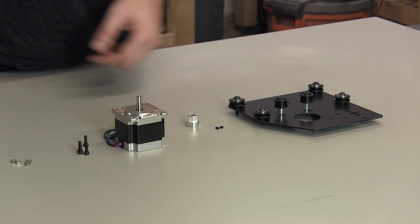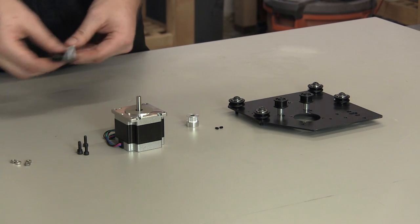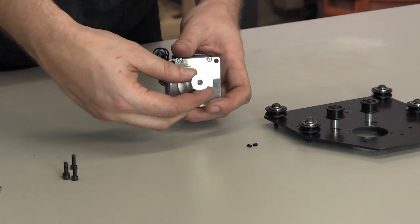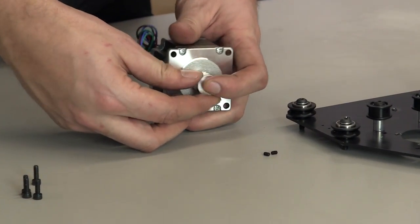Now we're going to mount your NEMA 23 to your Y motor mount plates. We're going to start by putting the pulley on the shaft of the motor and securing it with set screws.